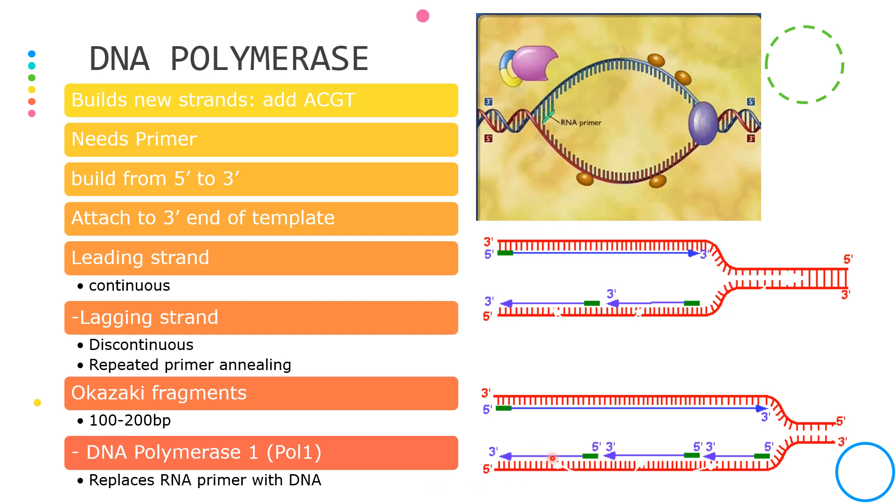The Okazaki fragments always have a RNA primer. That's why the DNA polymerase 1 would have to replace these primers into a DNA molecule.